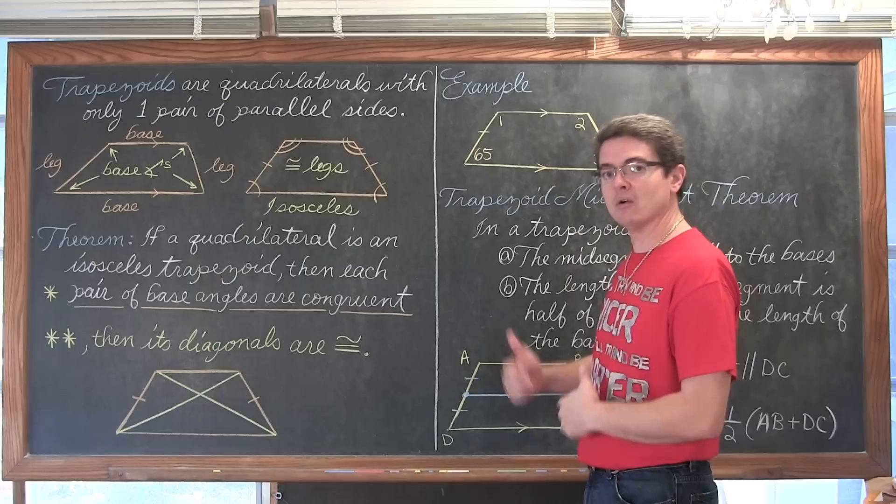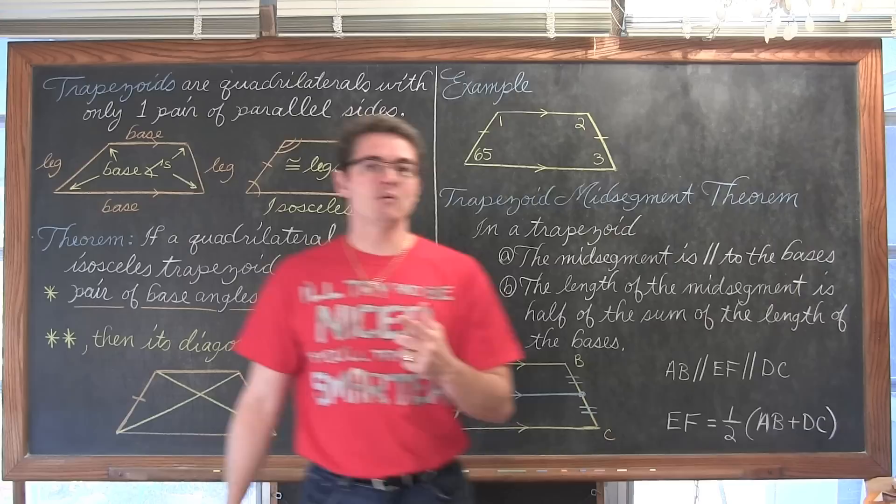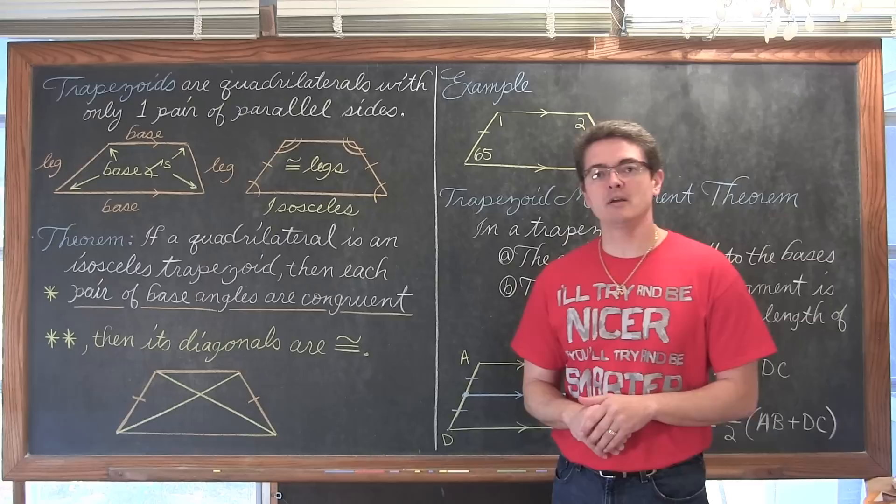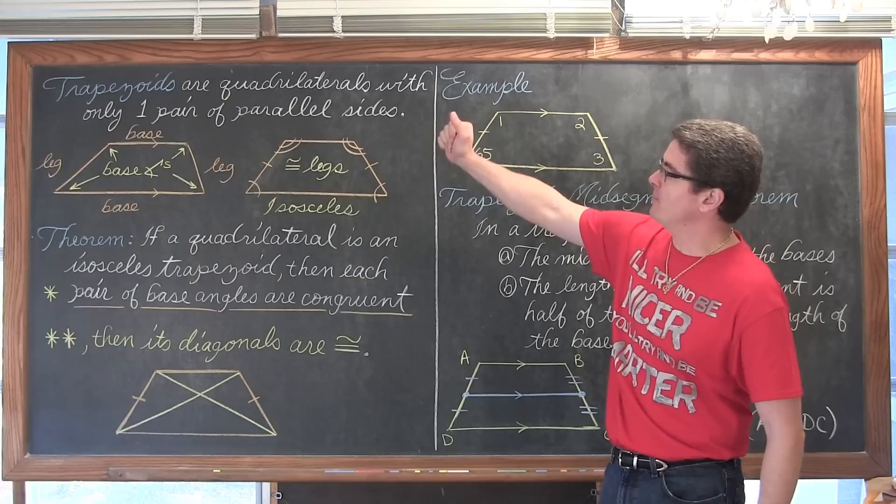In this video we are going to do one pretty simple example. We are going to do another example that has some algebra involved in it with the mid-segment theorem. Then we are going to prove the fact that diagonals of an isosceles trapezoid are congruent at the end of this video.